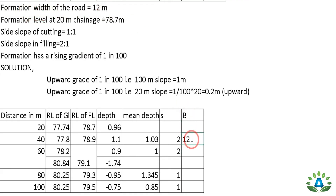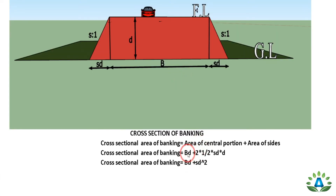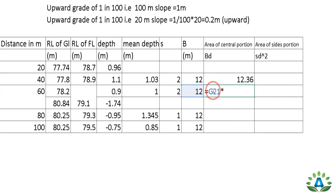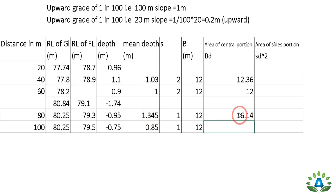Calculating the central area (bd) for each section: At the 20-40m interval (fill, d = 1.03): 12 × 1.03 = 12.36 m². At the 40-60m interval (fill, d = 1.0): 12 × 1.0 = 12 m². At the 60-80m interval (cut, d = 1.345): 12 × 1.345 = 16.14 m². At the 80-100m interval (cut, d = 0.85): 12 × 0.85 = 10.2 m².